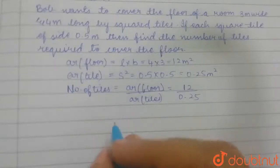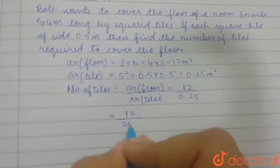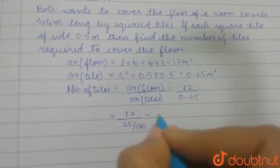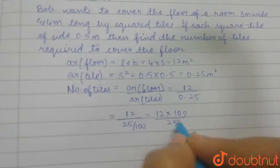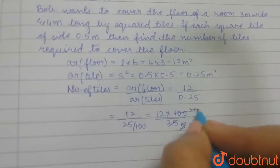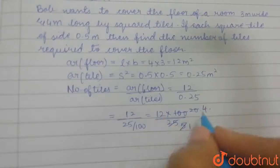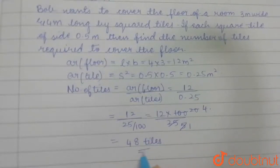So here we have, let's do this calculation carefully. 0.25 is 25 by 100. This will give you 12 into 100 by 25. Let's do it with the 5 table: 5 fives are 25, 5 twos are 10, 5 ones are 5, 5 fours are 20. 12 fours are 48. So this is 48 tiles. So the number of tiles required here are 48 tiles.